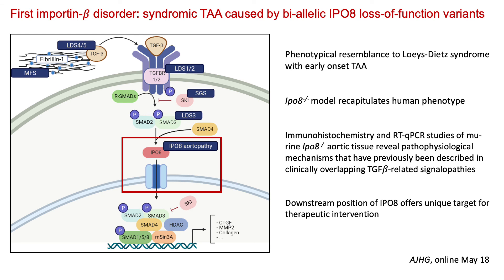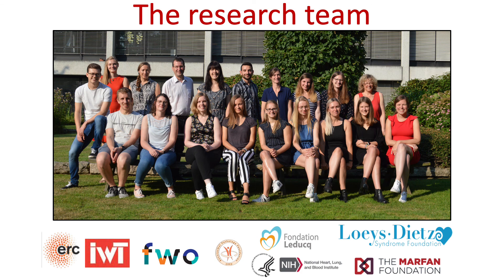In summary, we have shown that mutations in IPO8 display a phenotype that has resemblance to Loeys-Dietz syndrome with early onset thoracic aortic aneurysm. The mouse model nicely recapitulates what is seen in humans, and our first functional studies hint towards a pathophysiological mechanism that has been previously described. As our newly discovered gene is downstream of all the previously identified genes, it represents a unique target for therapeutic intervention. I would like to thank you for your attention and the research team in Antwerp for these very exciting new discoveries.